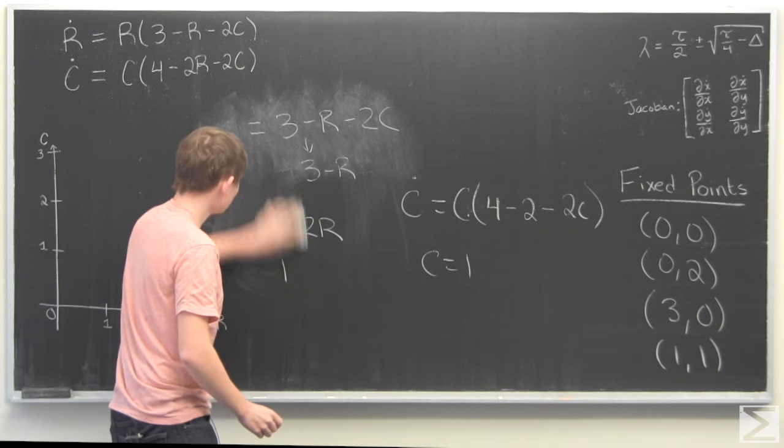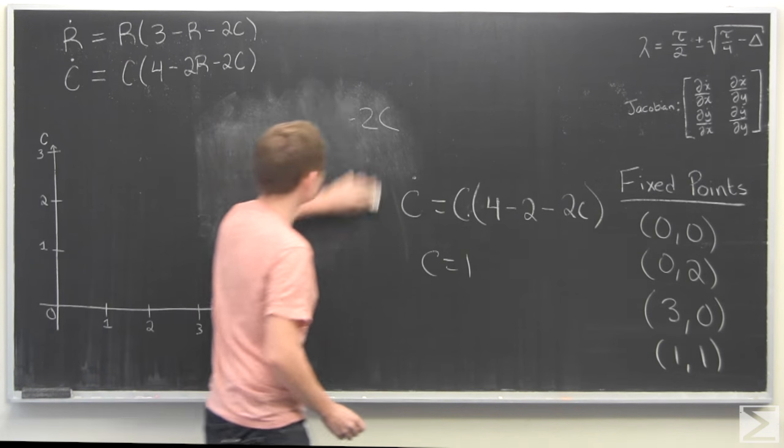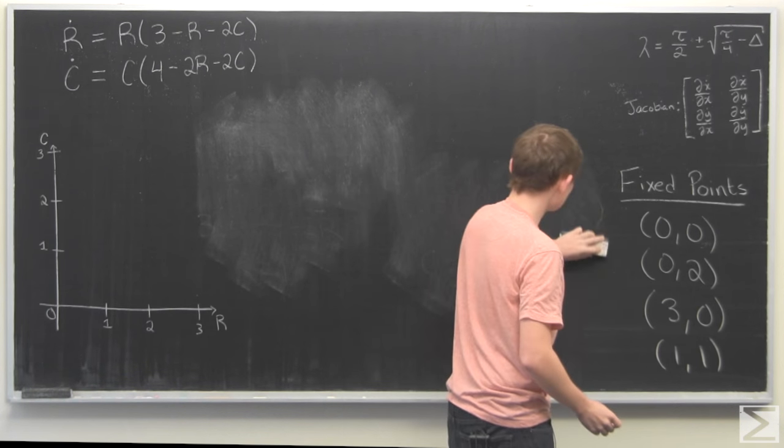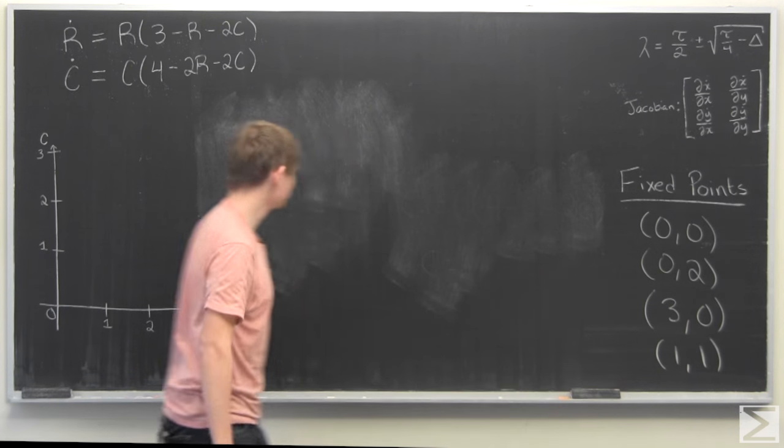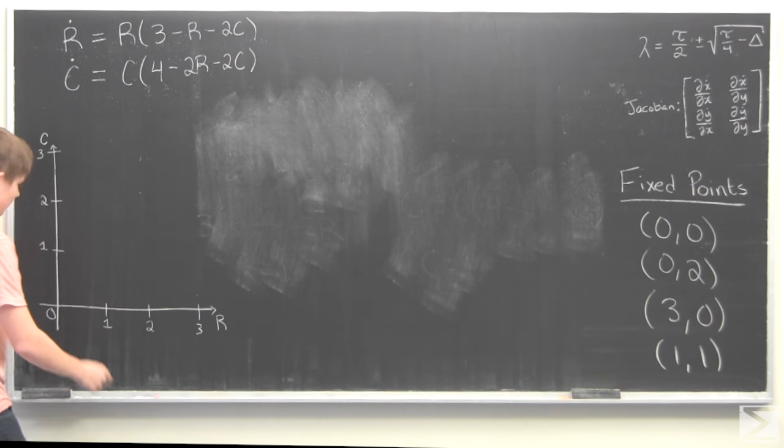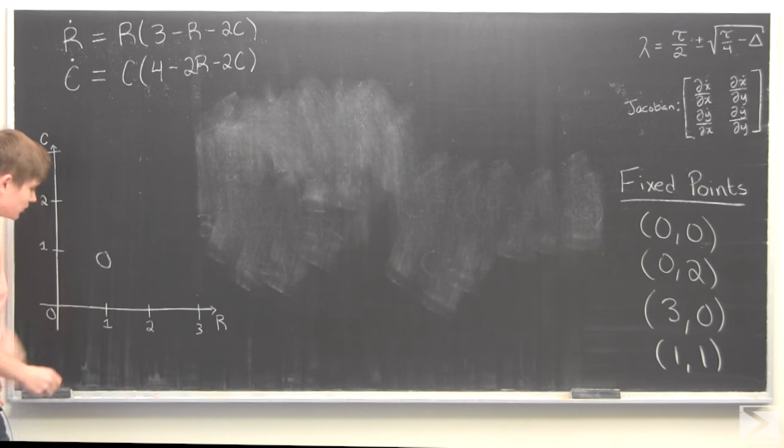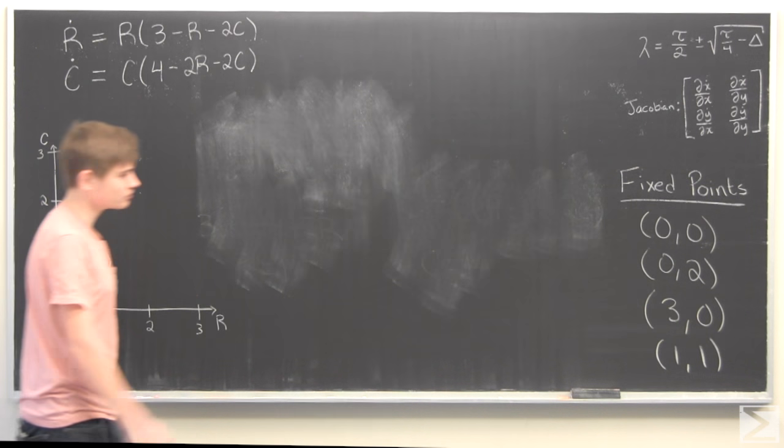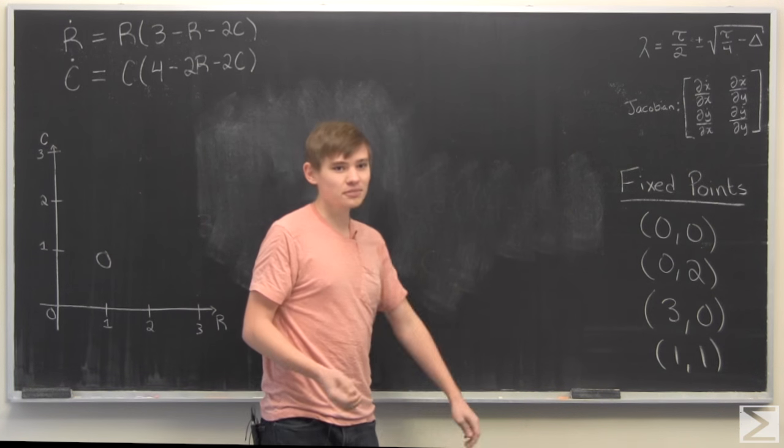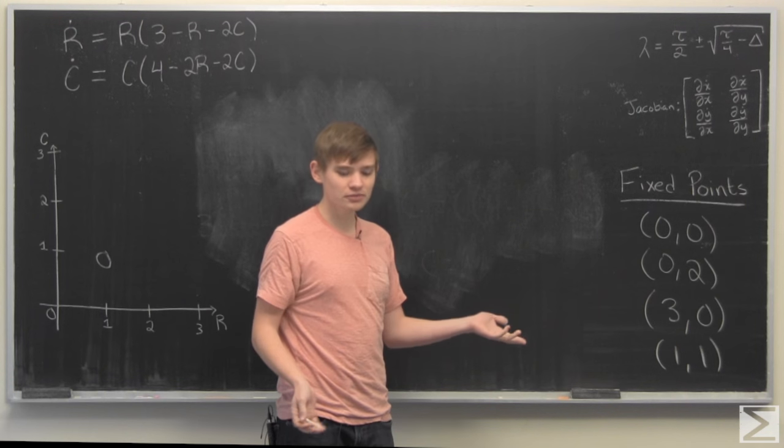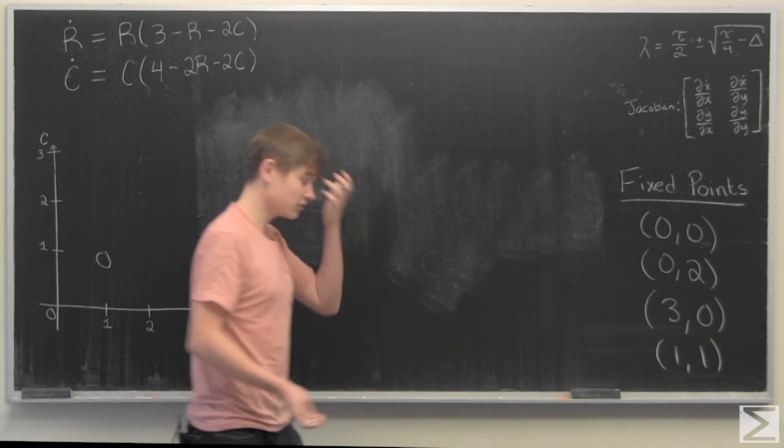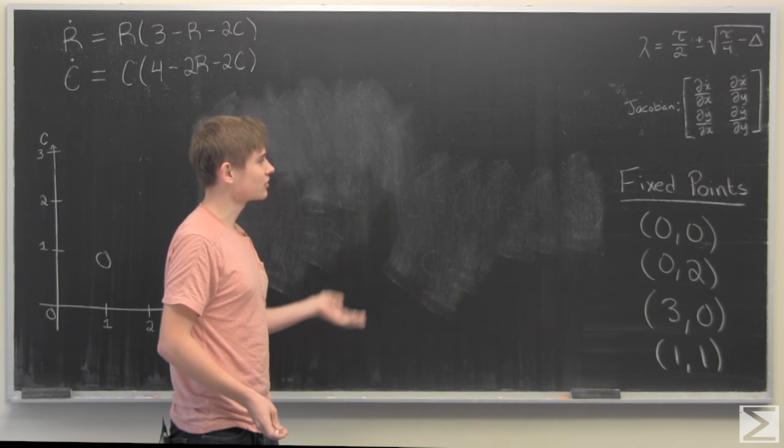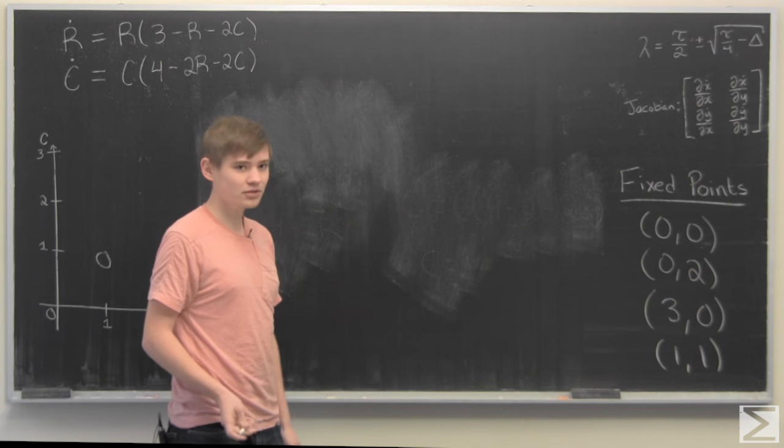So now that we have our fixed points, we need to determine the stability. And the stability means, if you're around the fixed point, do you move towards the fixed point or do you move away from the fixed point? You can do that by just testing a bunch of points around each fixed point or you can do it analytically, which is how we're going to go about this. And to do that, we're going to use the Jacobian matrix.